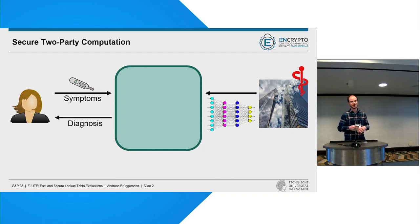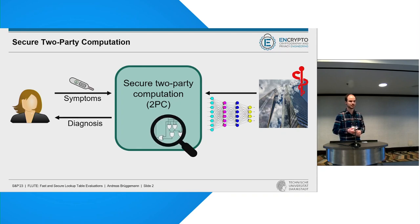Here we want that the patient's symptoms are kept private, but at the same time the service provider wants to keep their model private because this is essentially a business model. To achieve that we can employ secure two-party computation, which generally computes a function in such a way that only the outputs are revealed and is usually represented by some circuit in the binary or arithmetic domain.